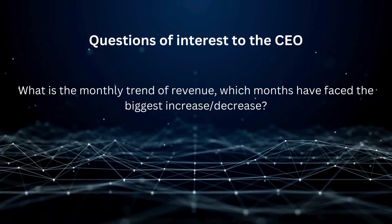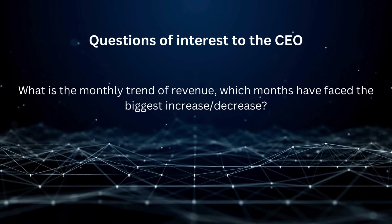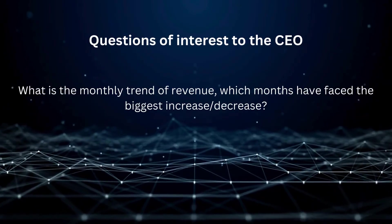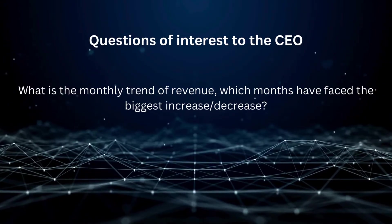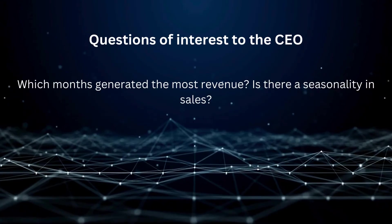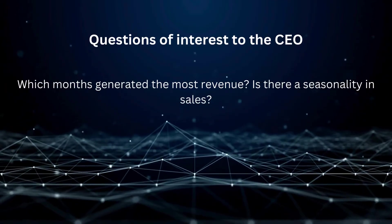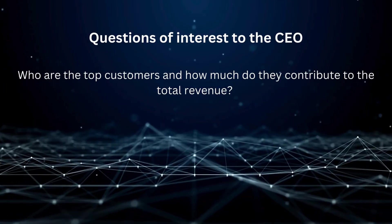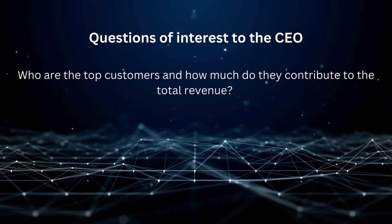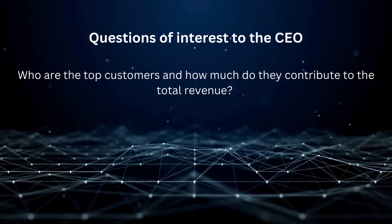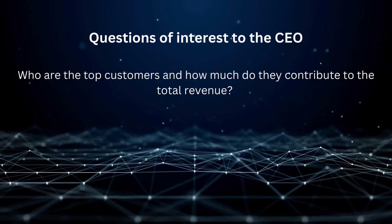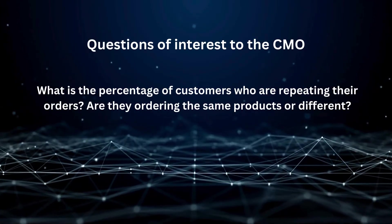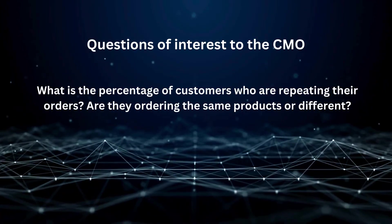The second CEO question should be: what is the monthly trend of revenue, and which months have faced the biggest increase or decrease? Next, the third should be: which months generate the most revenue — is there a seasonality in sales? The fourth question of interest to the CEO should be: who are the top customers and how much do they contribute to the total revenue?